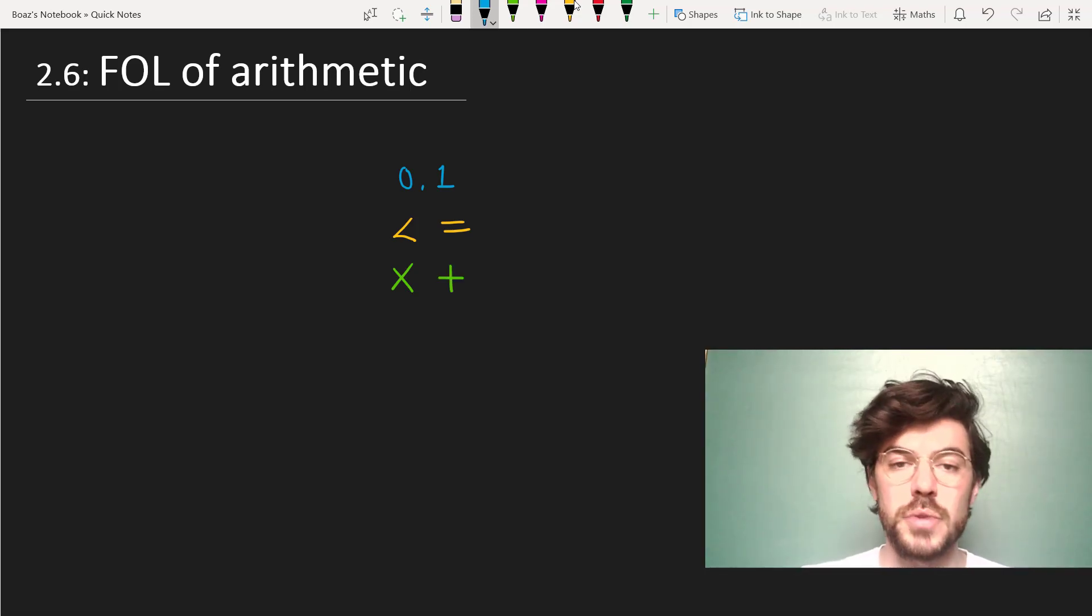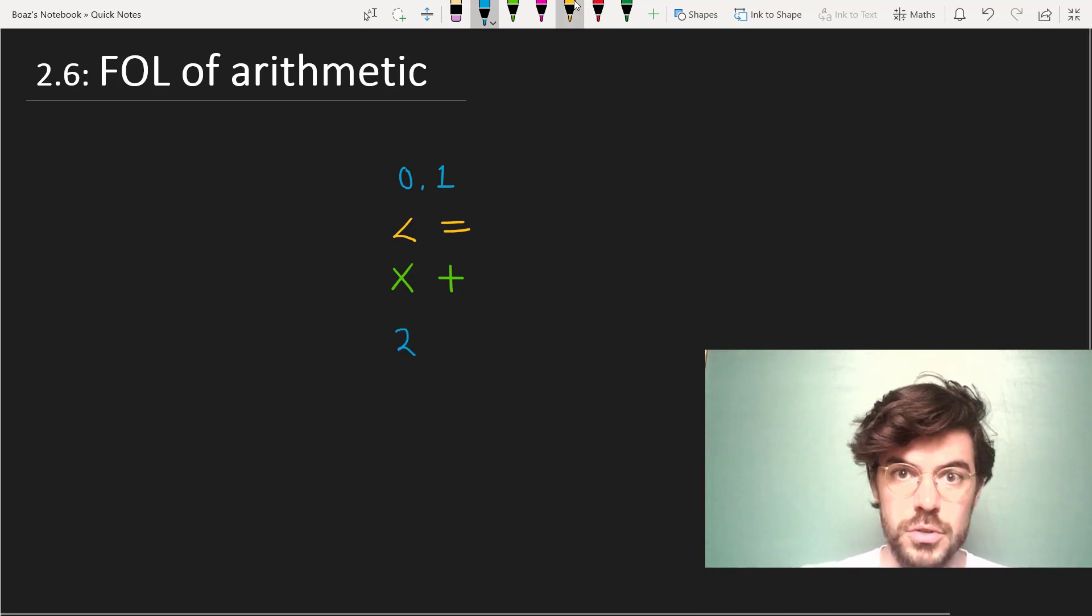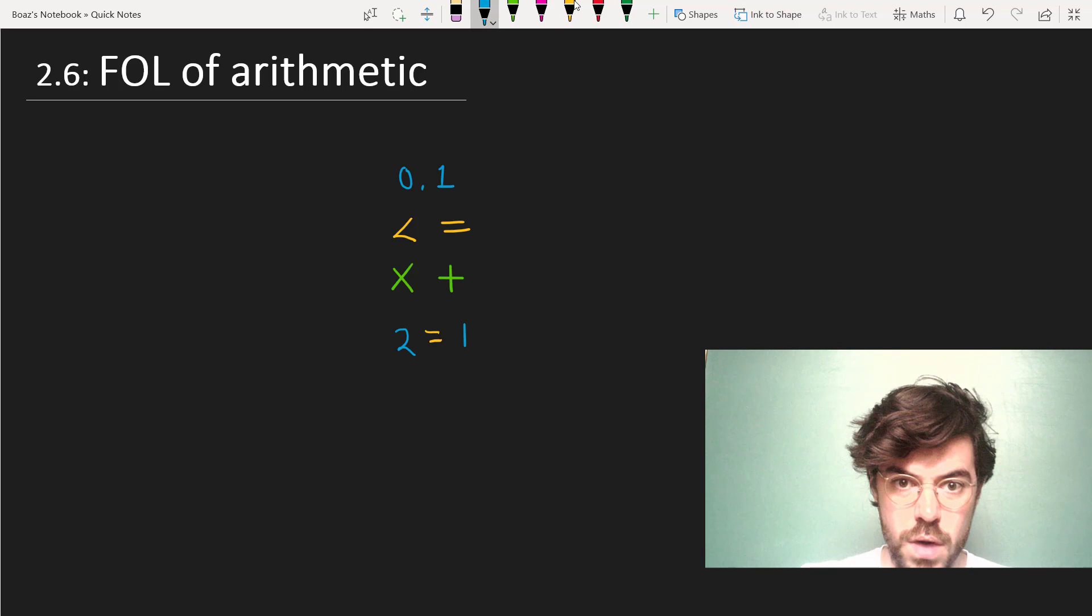What this allows us to do is to build up any arithmetic expression with a surprisingly small number of symbols. Here's how this works. Suppose we want to name the constant 2. Well, 2 just equals 1 plus 1.